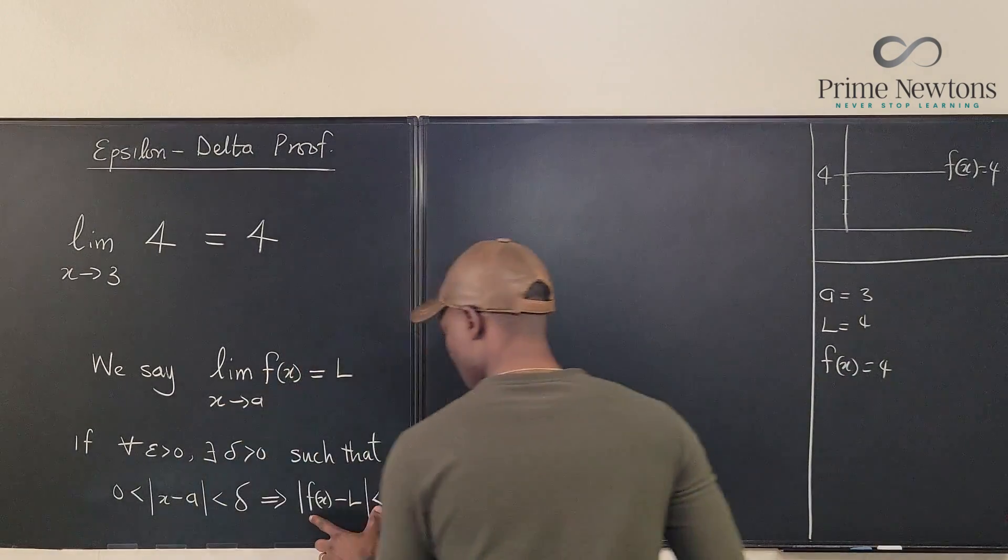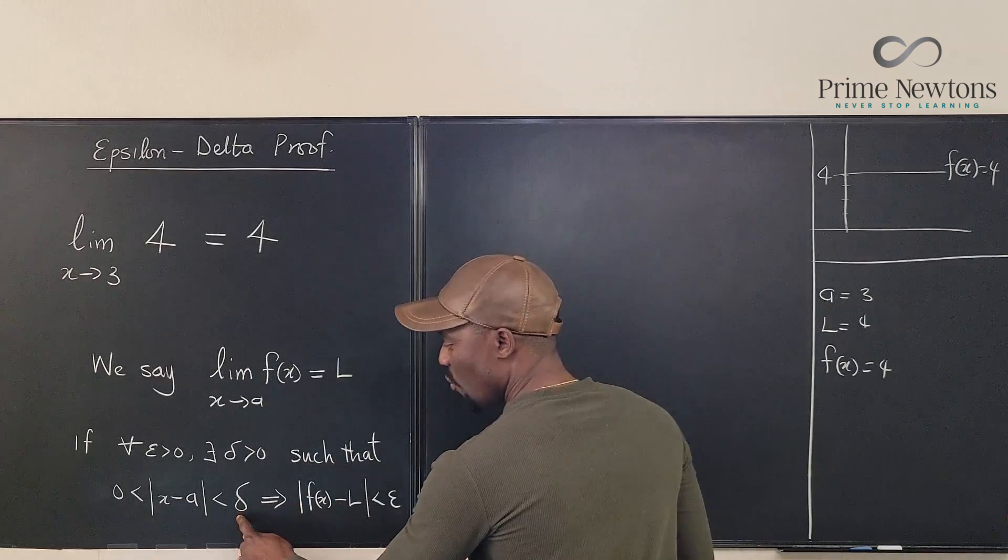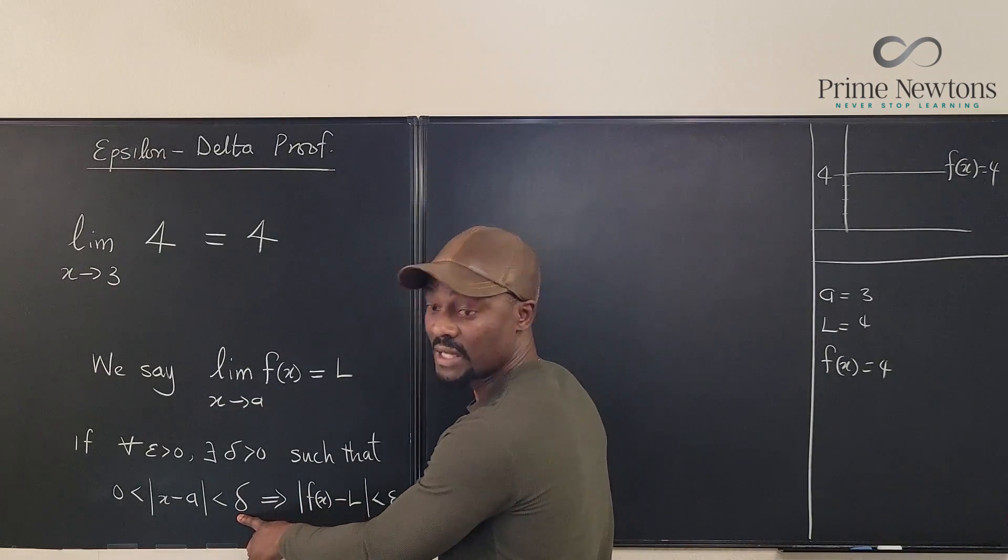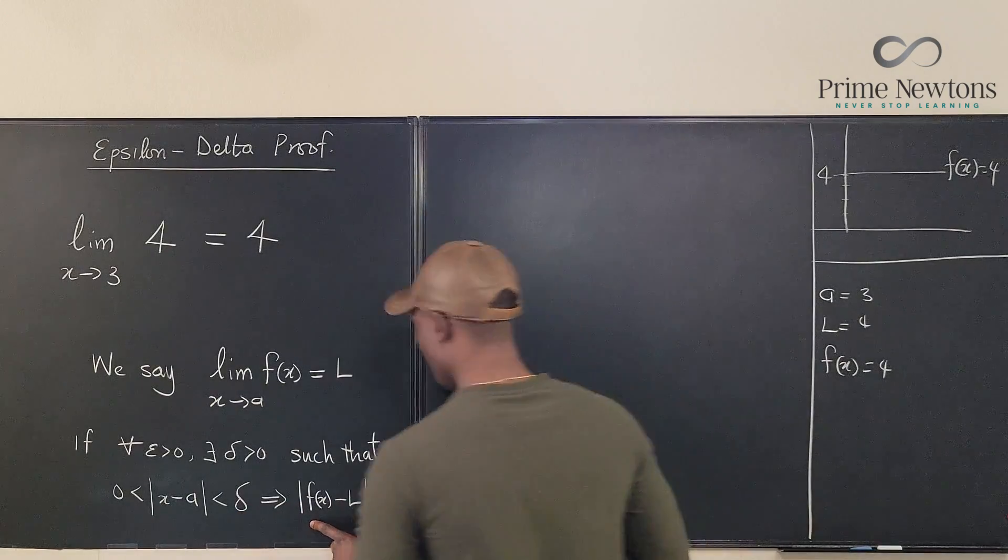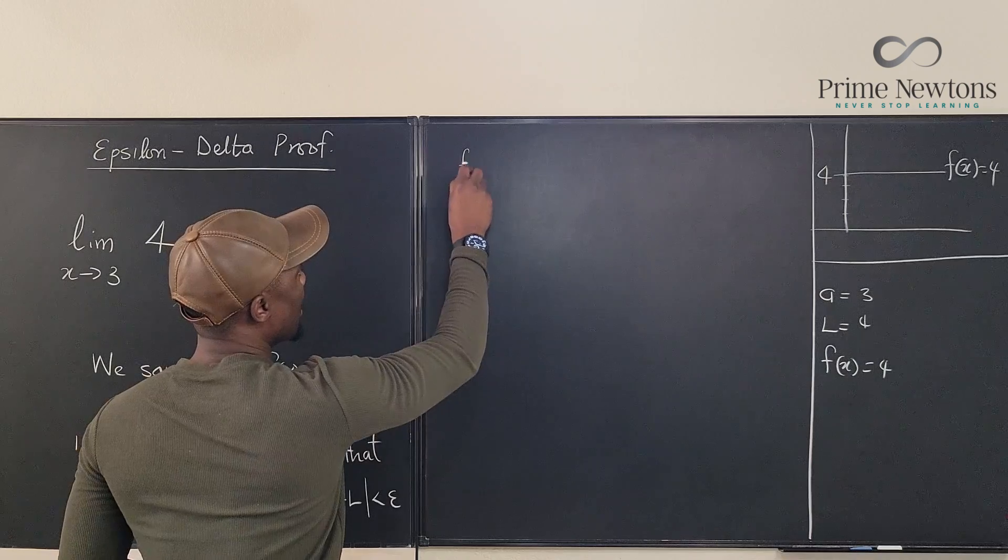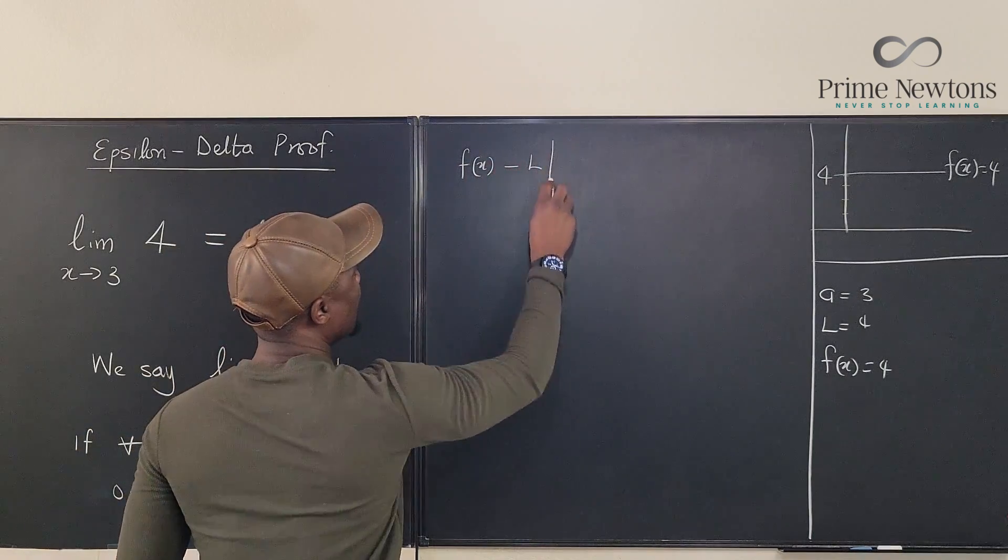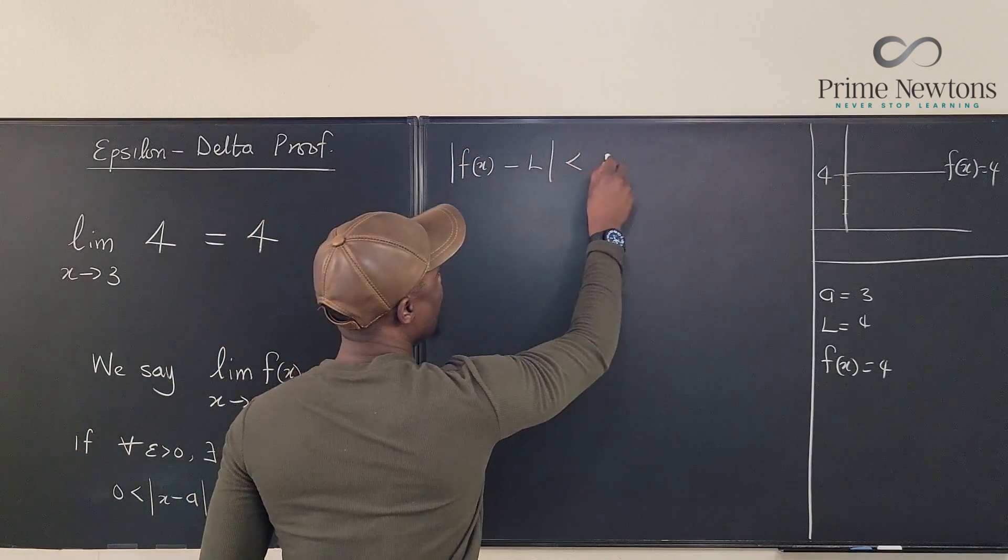so I know that a for this proof is going to be 3. I know that L is 4, and I know f of x equals 4. So let's start from this side to start and see if we can guess a value for delta.